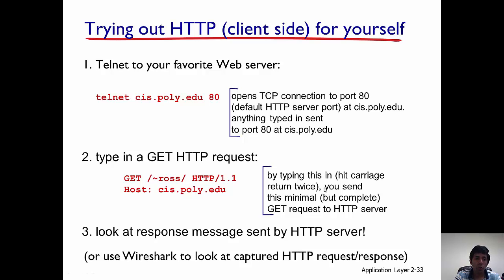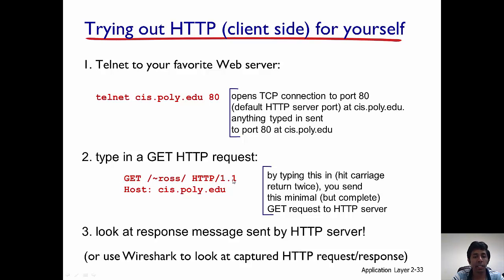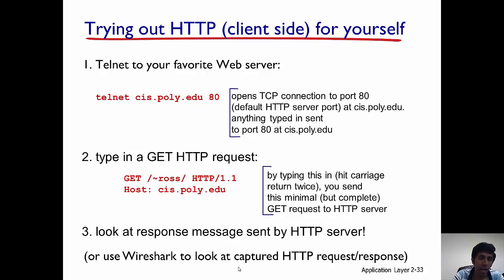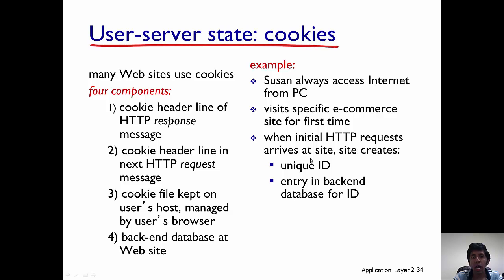You could try the HTTP client yourself using Telnet — connect to a server like cis.poly.edu on port 80, use the GET method with a URL, and it will download a response. You've also been using Wireshark throughout this course, and you could use it to capture and examine HTTP request and response messages. That concludes today's lecture — in the next class we will start talking about cookies.